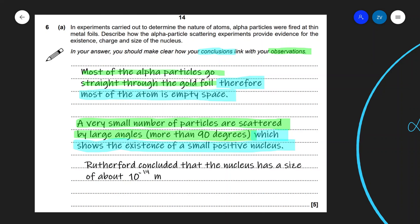Additionally, Rutherford made one more conclusion and that is that the nucleus has a size of approximately 10 to the power of minus 14 meters. Now, how exactly did Rutherford get that number? Stay tuned for our next video.